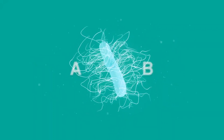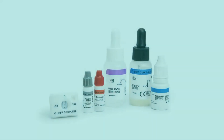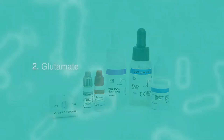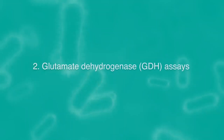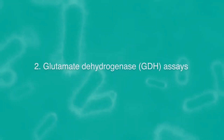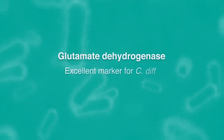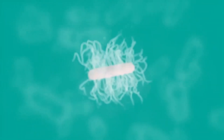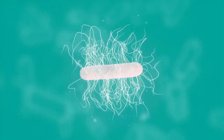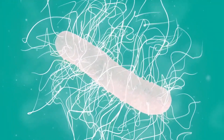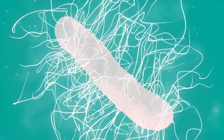If you don't have the toxins there, you don't get the disease. And this is why we continue to think that toxin detection is so important. GDH is a metabolic enzyme called glutamate dehydrogenase. It's an excellent marker for C. diff. The key thing to remember about GDH is that it's produced in large amounts when the organism is actively growing. This is the reason it serves as a good marker for C. diff.